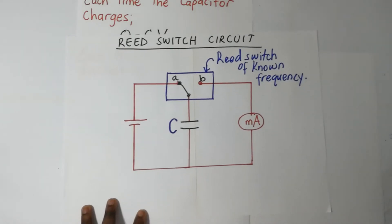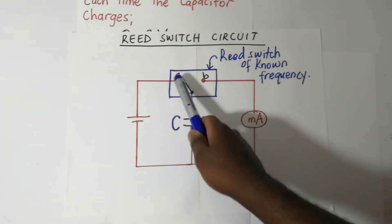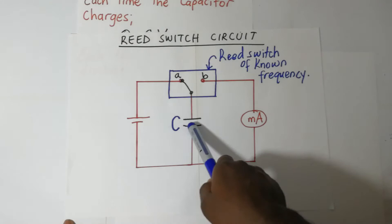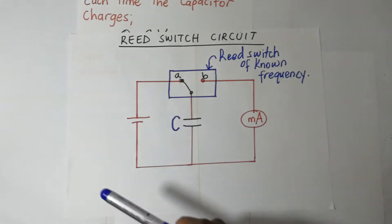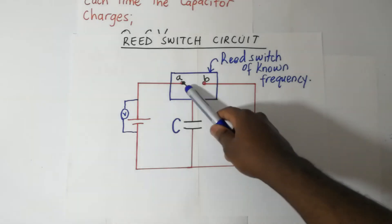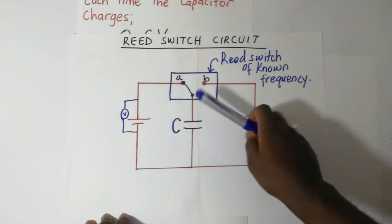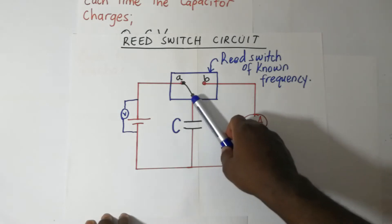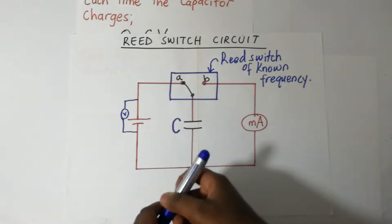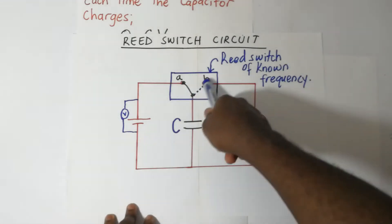We connect our apparatus and then switch on the reed switch. Every time this reed switch touches terminal A, this circuit is completed and the capacitor is charged. When the switch touches B, the capacitor is disconnected from the charging part of the circuit, so the capacitor gets discharged.